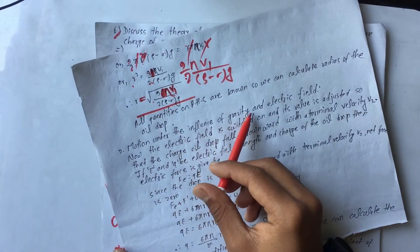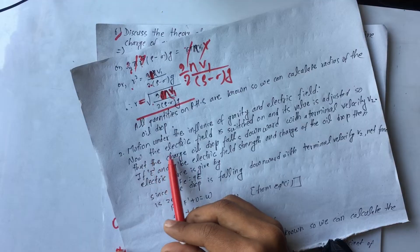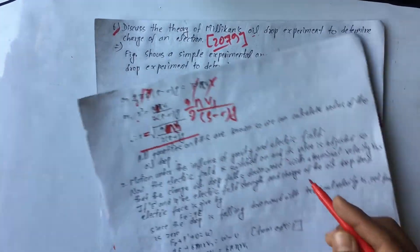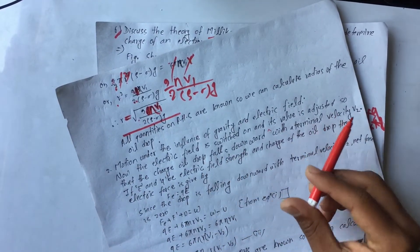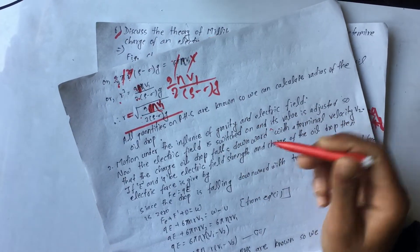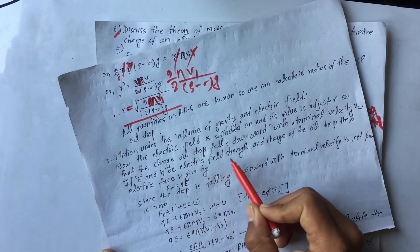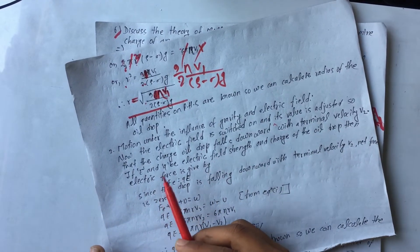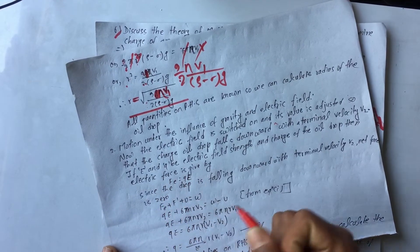Now we study the motion of the drop under the influence of both gravity and electric field. The electric field is switched on. By adjusting a variable electric field, the charged drop falls downward with a new terminal velocity V2. If E and Q are the electric field strength and charge of the oil drop, the electric force is given by F_E = QE.